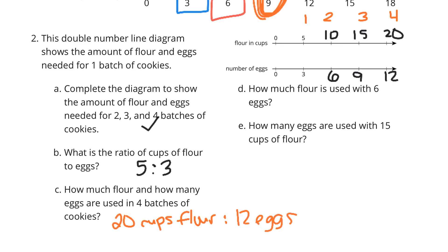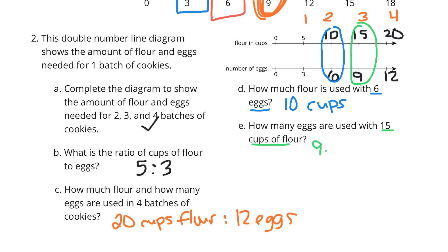How much flour is used with 6 eggs? That's going to be right here — that's our second batch, or double batch. It's going to be 10 cups. And lastly, how many eggs are used with 15 cups of flour? Here's our 15 cups of flour — it's going to be 9 eggs.